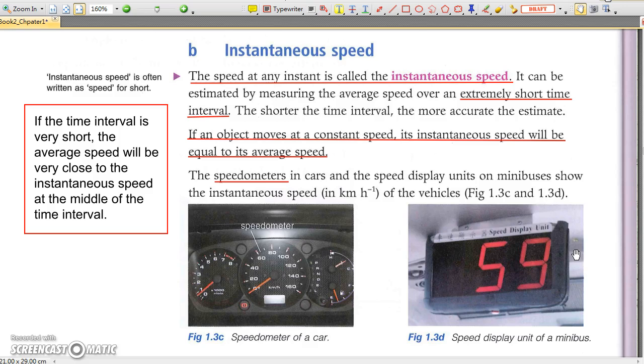This speed is called instantaneous speed, which is the speed at a particular instant. It is common that the instantaneous speed is changing all the time, and the instantaneous speed need not equal the average speed.